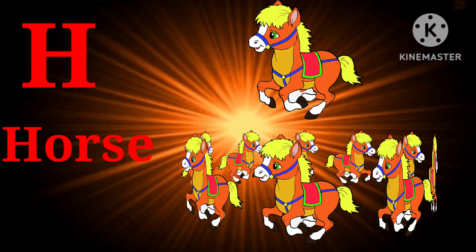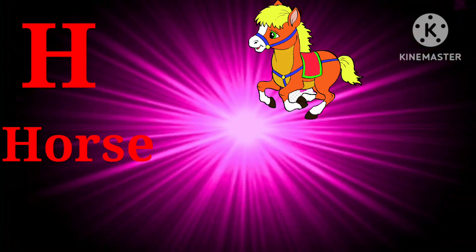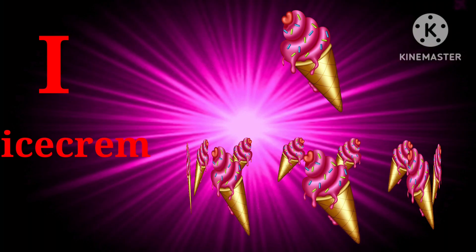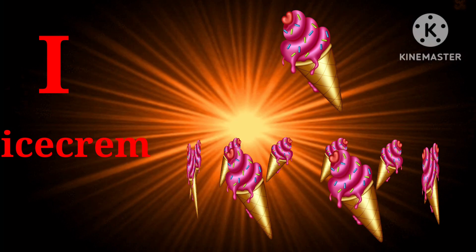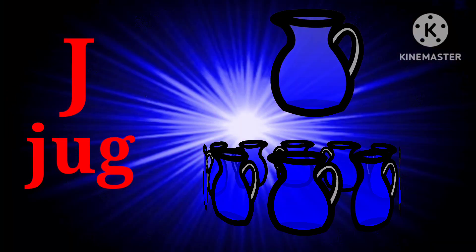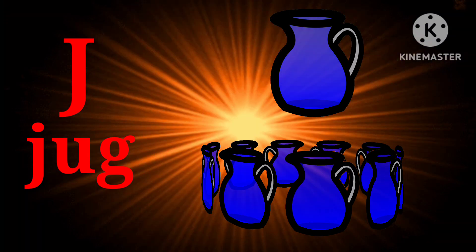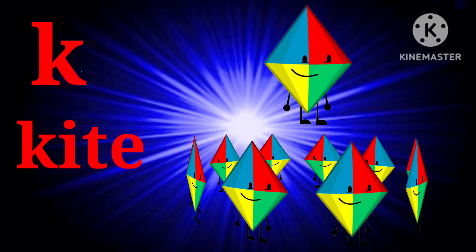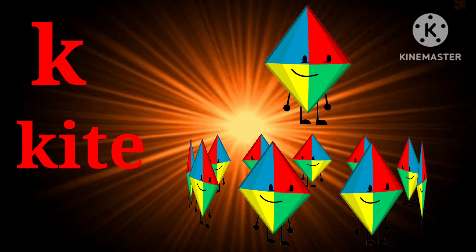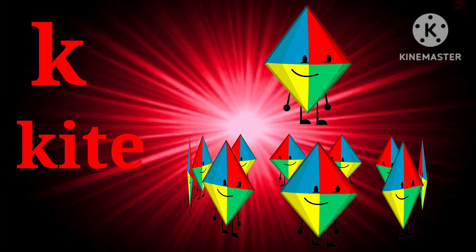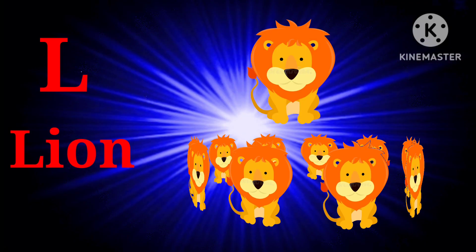I for ice cream, J for jug, K for kite, L for lion.